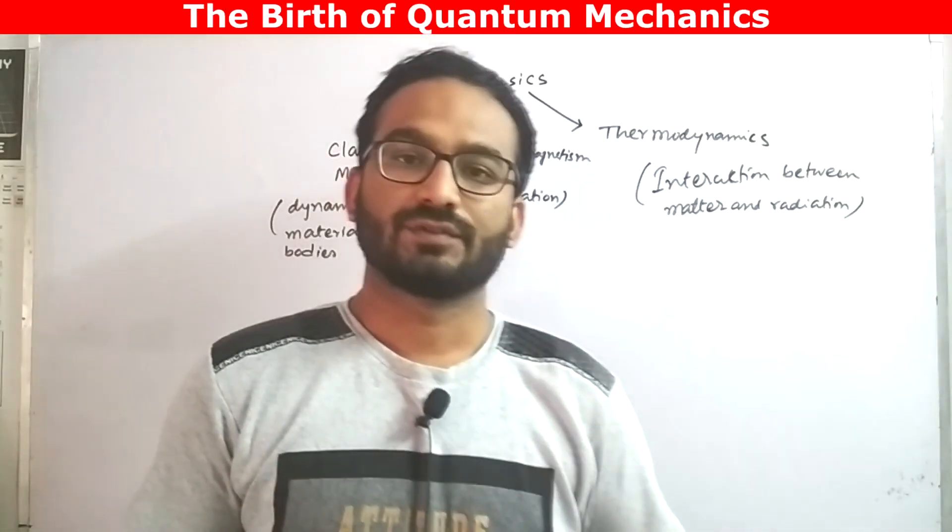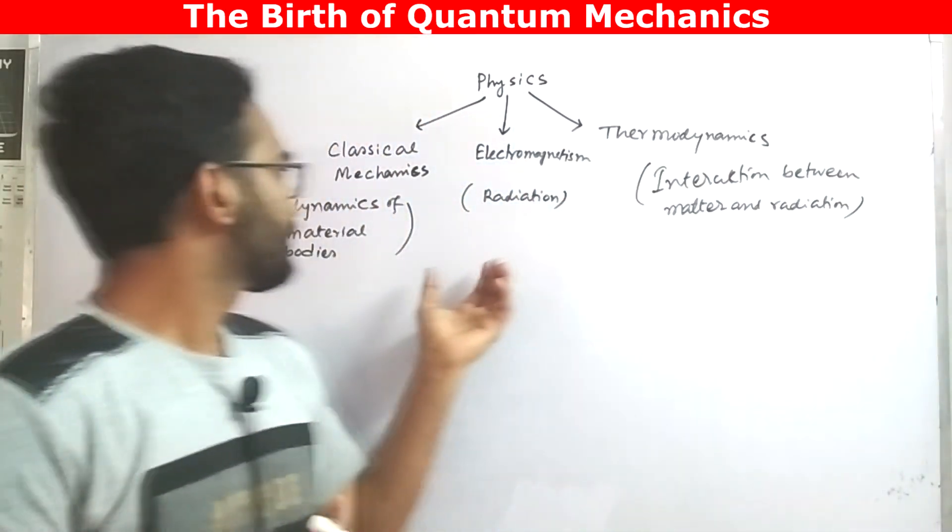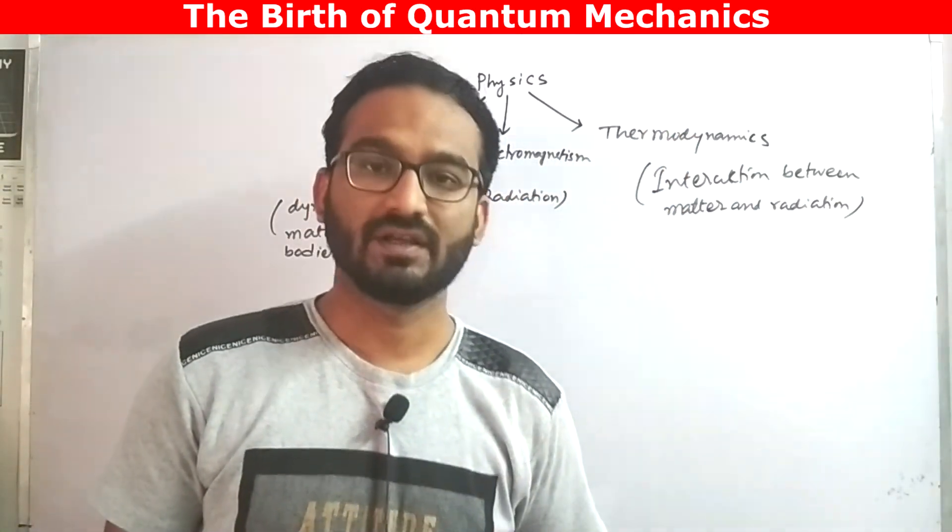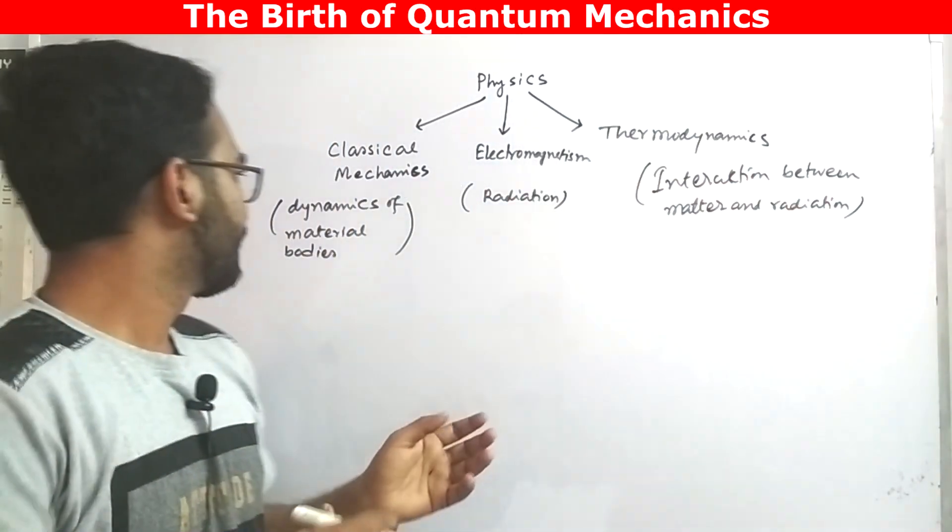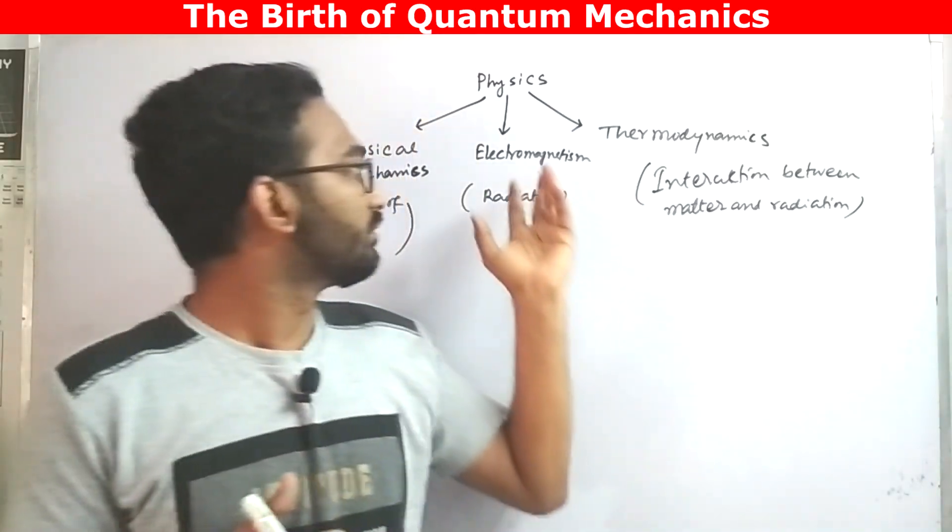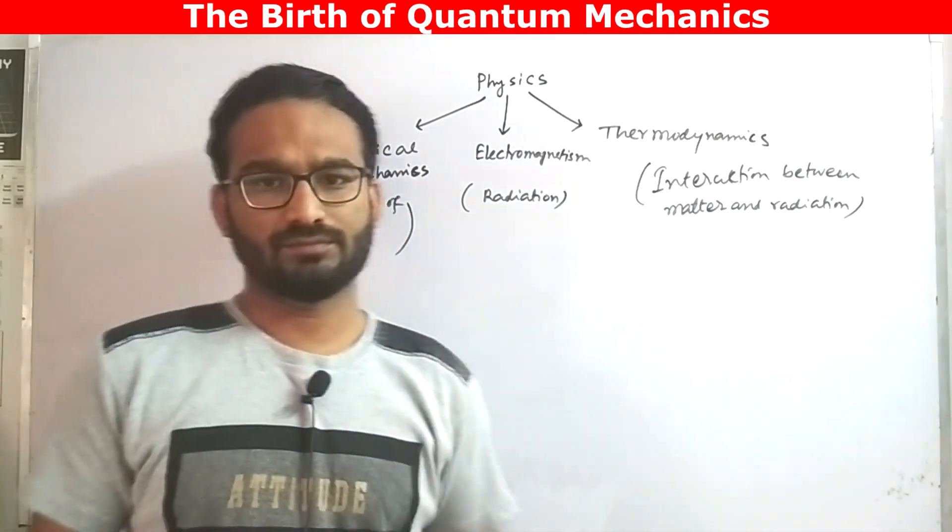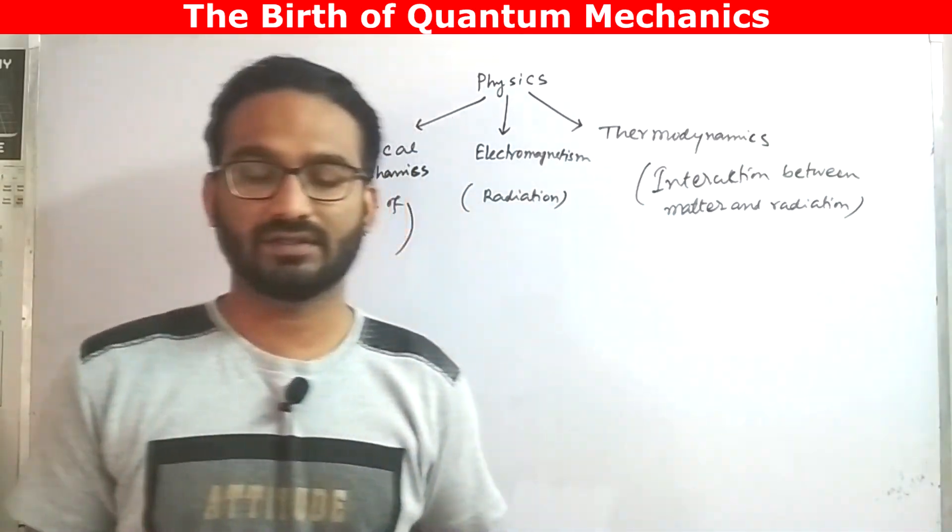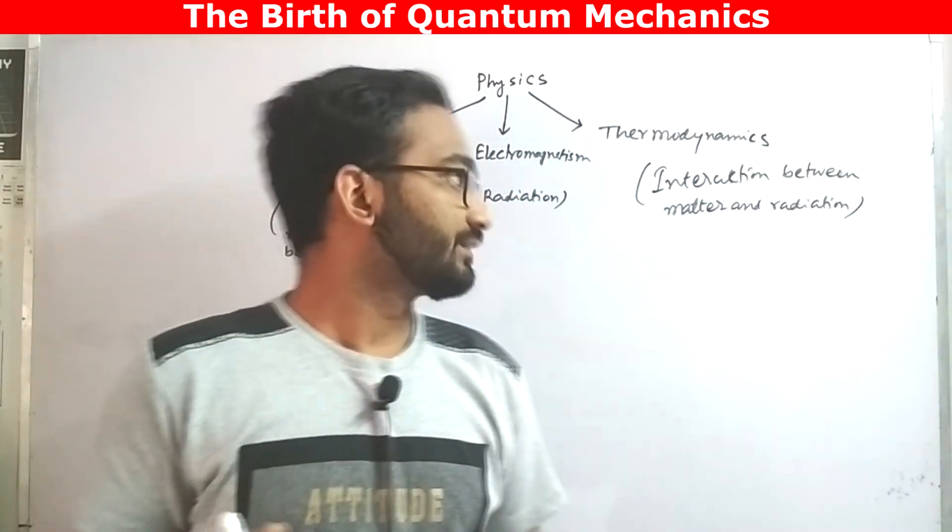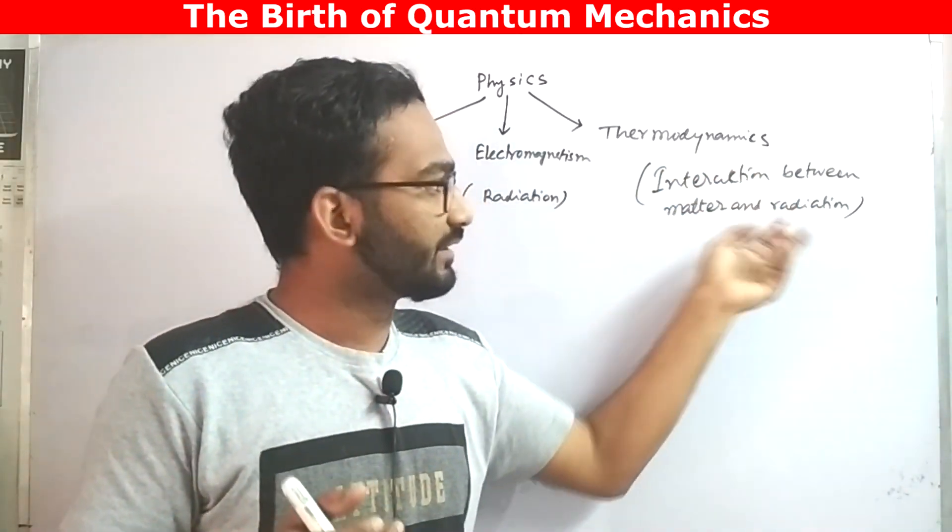At the end of 19th century, physics was essentially consisting of three major parts. It basically consisted of classical mechanics, the theory of electromagnetism, and thermodynamics. Classical mechanics gives a description of the dynamics of material bodies, and using Maxwell's four electromagnetic equations scientists were able to describe the radiation. Radiation and matter were described in terms of waves and particles, and thermodynamics was able to explain the interaction between matter and radiation.